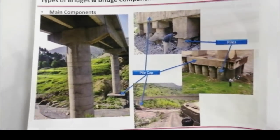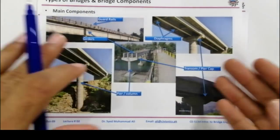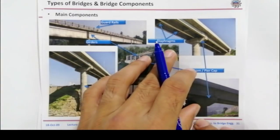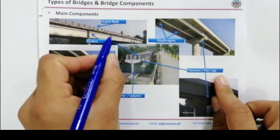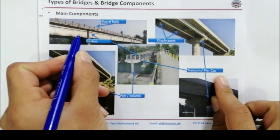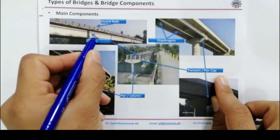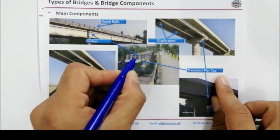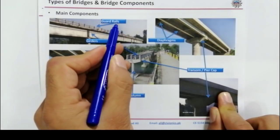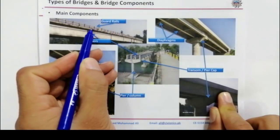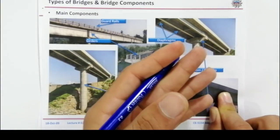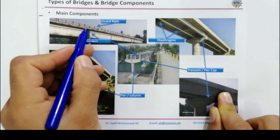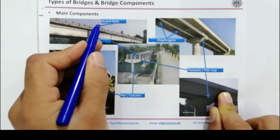What is a pier, what is a column in an RCC bridge? I will also discuss that. Now in this picture you can see this is an RCC bridge. These are called girders — this arrow can also show you the girder. And these are called guard rails, which we also use as handrails in staircases. These are the guard rails as a main component of the bridge.